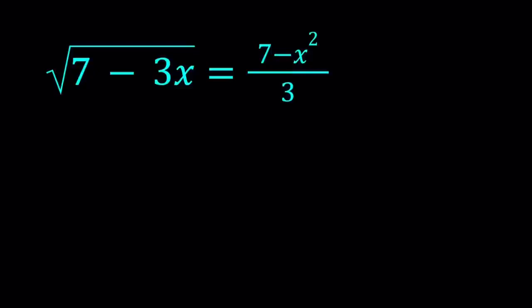Hello everyone. In this video, we're going to be solving a radical equation. We have the square root of 7 minus 3x equals 7 minus x squared all over 3, and we're going to be finding the x values. I'll be presenting two methods. Let's start with the first one.